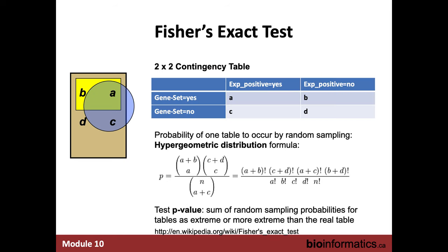Here's a contingency table for this particular enrichment test. You're measuring essentially two binary properties: is a gene part of your experiment, yes or no? Was it detected significantly high, for example? And does that gene belong to a specific pathway or not? These categories are respectively A, B, C, and D. Using the hypergeometric distribution, we determine how likely it is to have as many genes that are both in the pathway and your experimental list of genes.